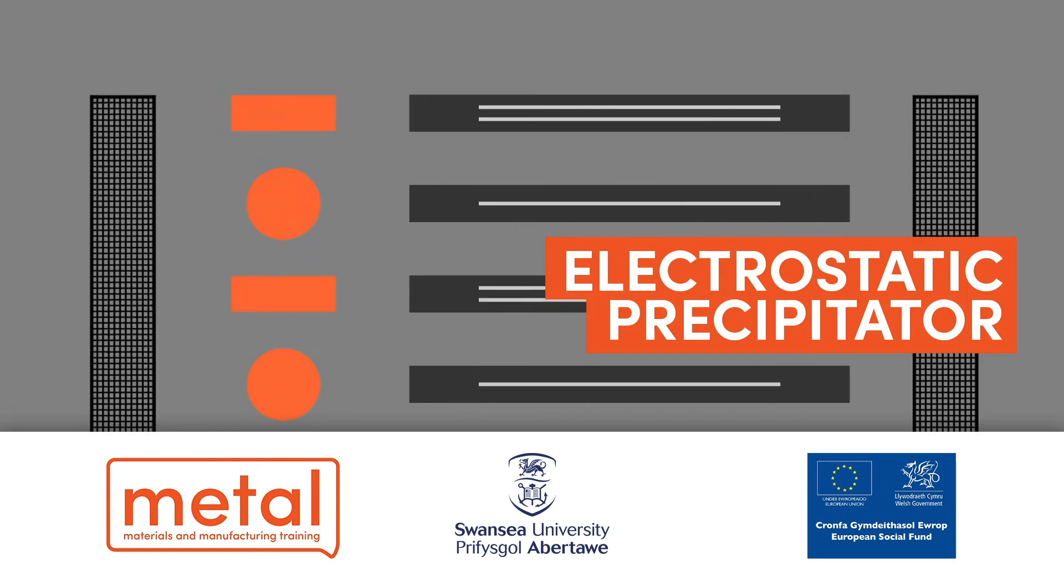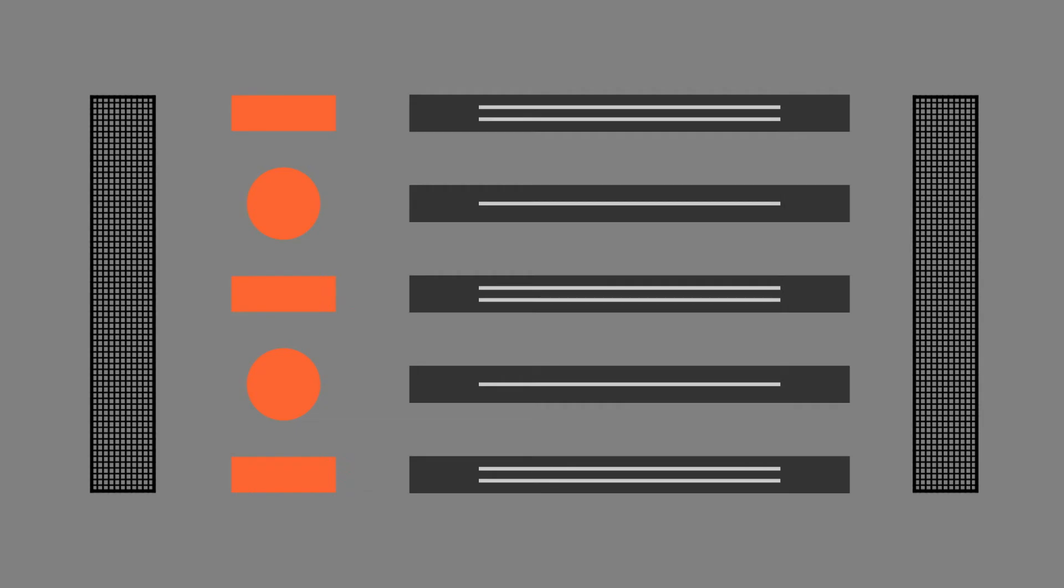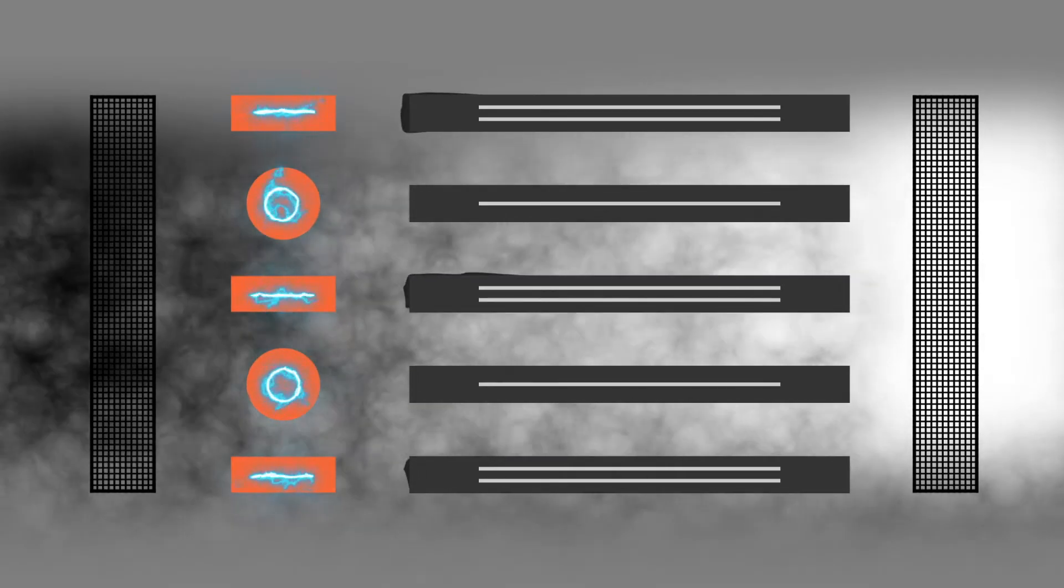An electrostatic precipitator, in short ESP, removes carbon and dust particles from a gas stream by using electrical energy to charge particles either positively or negatively.